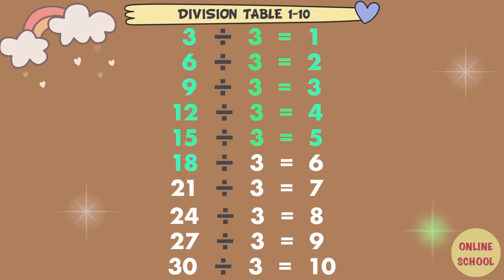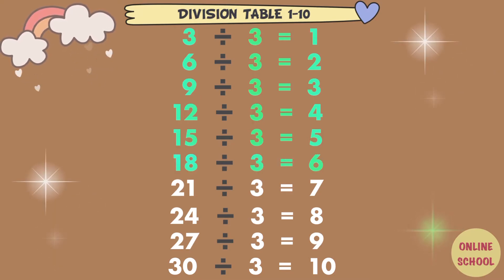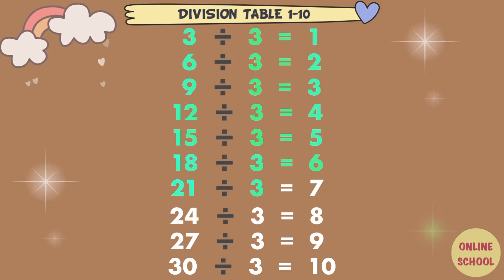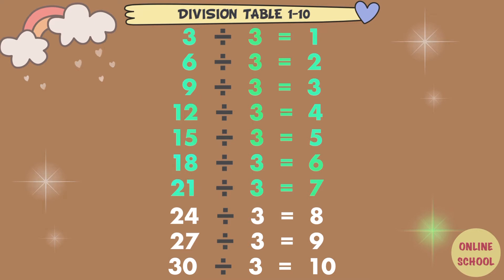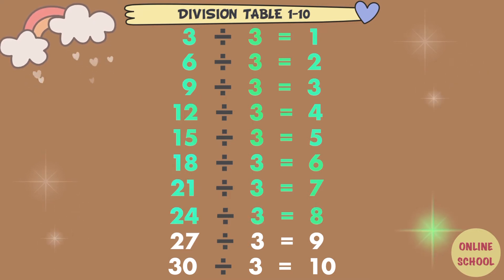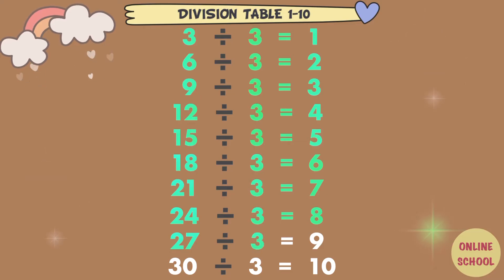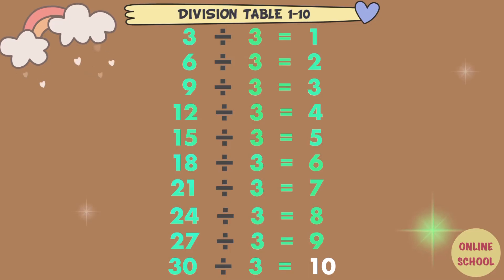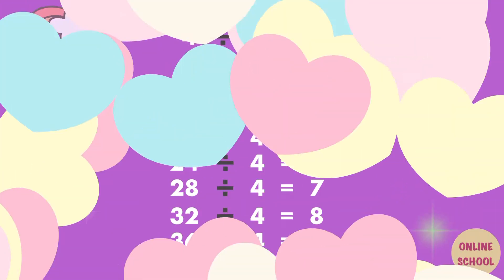18 divided by 3 equals 6. 21 divided by 3 equals 7. 24 divided by 3 equals 8. 27 divided by 3 equals 9. 30 divided by 3 equals 10. Divided by 4.